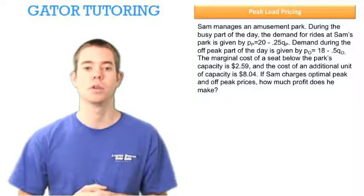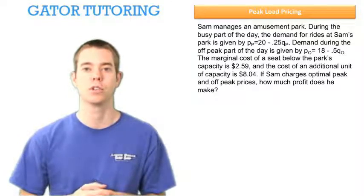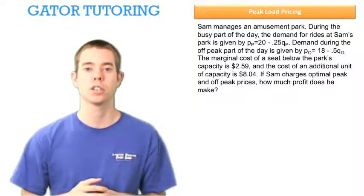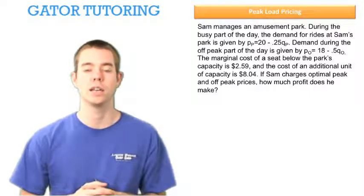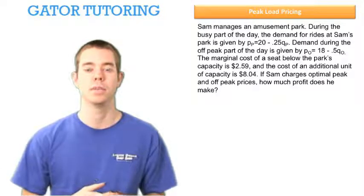The marginal cost of a seat below the park's capacity is $2.59 and the cost of an additional unit of capacity is $8.04. If Sam charges optimal peak and off peak prices, how much profit does he make?